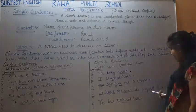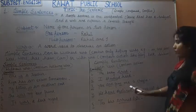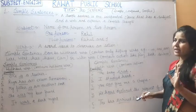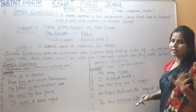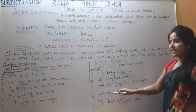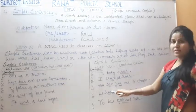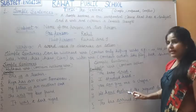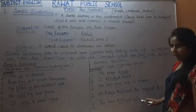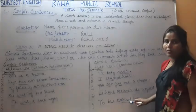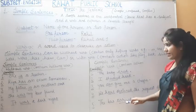Fourth: 'We have declined the request of a client.' It means we denied or refused a client's request. Here 'have' is a helping verb and 'declined' is the main verb. Fifth: 'The bus arrived late.' Here 'arrived' is the verb and no helping verb has been written.